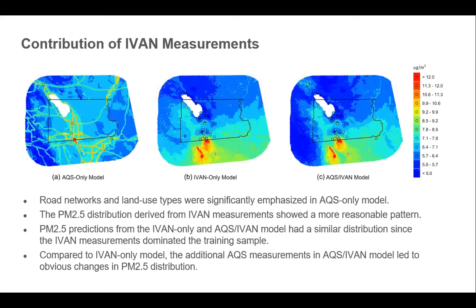Looking at the prediction surfaces: the AQS-only model has such poor spatial coverage that the prediction surface is governed by land use parameters alone. The IVAN-only and AQS plus IVAN models show very different and more informative spatial patterns. The benefit of still including AQS in the combined model is that it reduces unnecessary noise from the low-cost sensor data — comparing the IVAN-only and combined maps, the combined model has a cleaner background in areas where there should be low PM. These are preliminary findings.